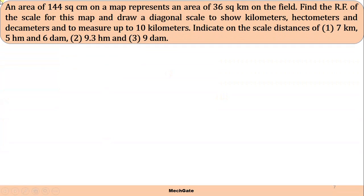Let's solve a problem: an area of 144 square centimeters on a map represents an area of 36 square kilometers on the field. Find the RF of the scale for this map and draw a diagonal scale to show kilometer, hectometer, and decameter, measuring up to 10 kilometers. Indicate on the scale: 7 kilometers 5 hectometers and 6 decameters; and 9.3 hectometers and 9 decameters.